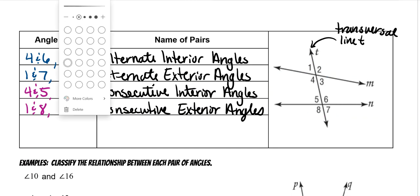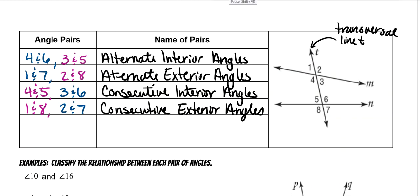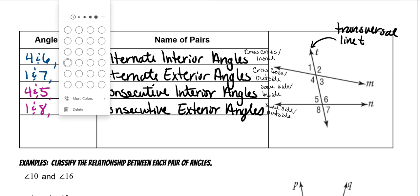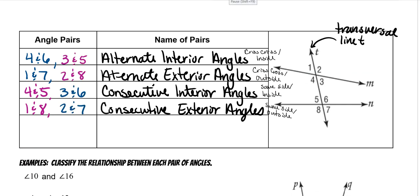To summarize: alternate interior is crisscross on the inside; alternate exterior is crisscross on the outside; consecutive interior is same side on the inside; and consecutive exterior is same side on the outside. That's what those words mean — you just don't usually see them written out in the real world.